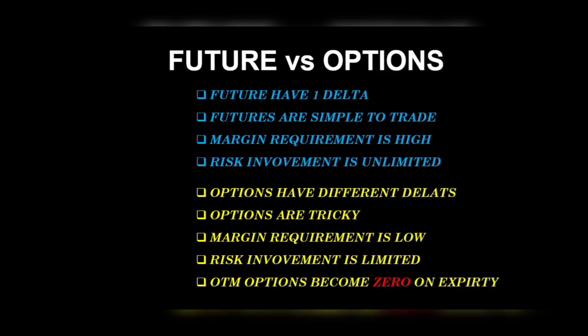For example, if you have a buy position initiated at 17,000, take a call at 17,300, and the market moves 250 points against you — your option price will go to zero, because OTM options become zero on expiry day. We will talk about intraday: how to trade, how to hedge, how to keep risk limited, and which option to take. We will see in detail. Options are tricky, so many people prefer to trade futures.